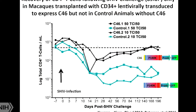We transplanted animals after high-dose radiation, with CD34 cells modified with a lentiviral vector to express the fusion inhibitor C46. These animals recovered and were expressing C46. Only the animals that had C46 expression in their CD34-derived T cells were actually able to recover T cells back to normal levels. The other animals developed AIDS and did not recover their T cells. This was our first experiment showing that C46 can protect CD34-derived CD4 cells.